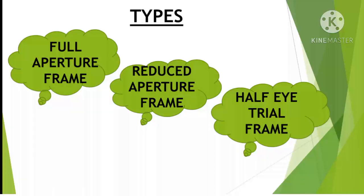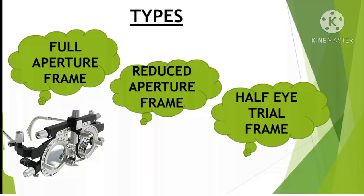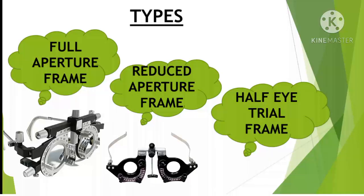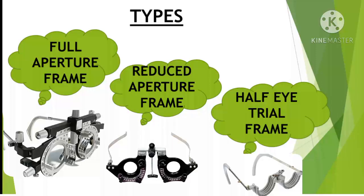Types of trial frame: the trial frame comes in three different types. First is the Full Aperture Frame. Second is the Reduced Aperture Frame. And the third one is the Half Eye Trial Frame. In the image you can see the difference between these three types.